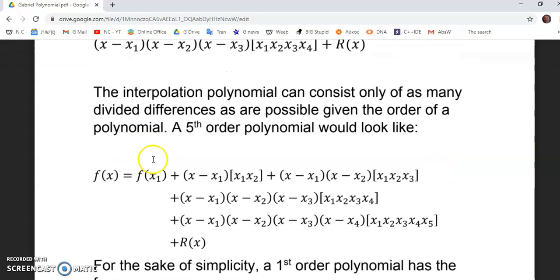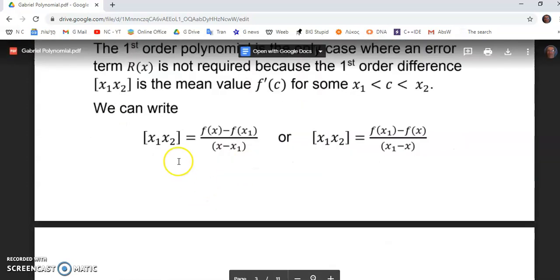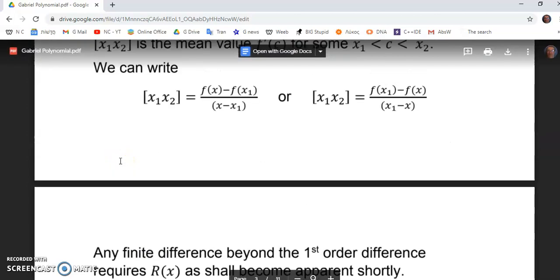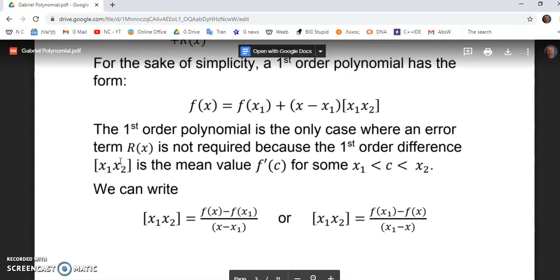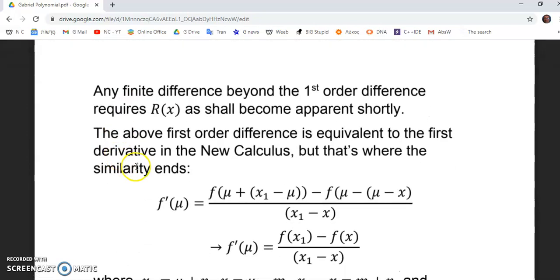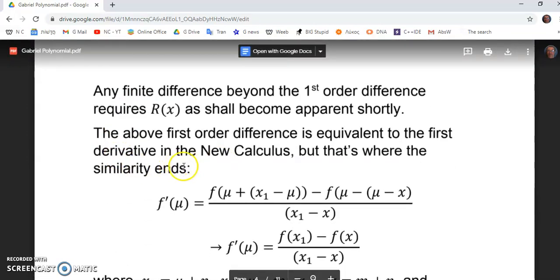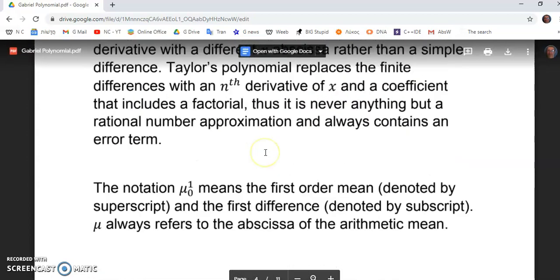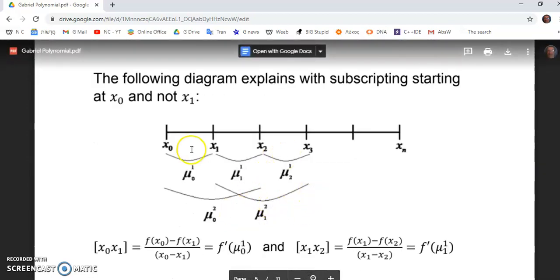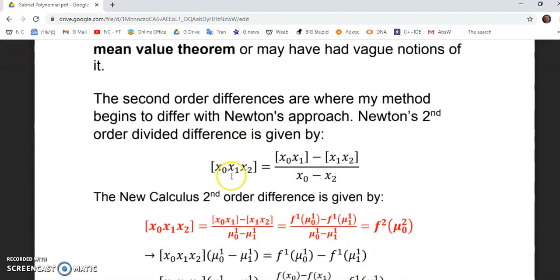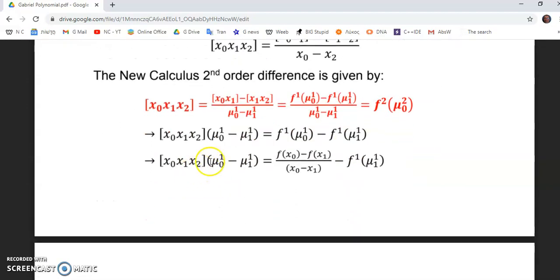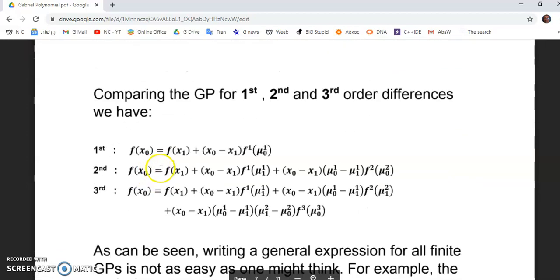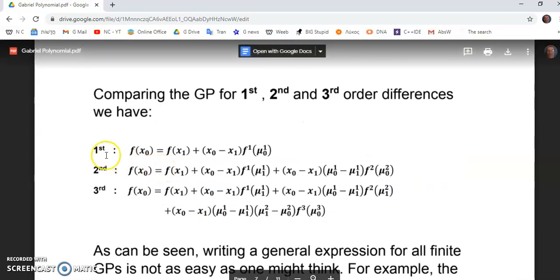And then I proceed to show you how he got it, and then I introduce the Gabriel polynomial, which is similar in the first order differences, but that's about where the similarity ends. In this article, I explain to you how everything works, and I actually give you a couple of examples so that you can see how the Gabriel polynomial works.